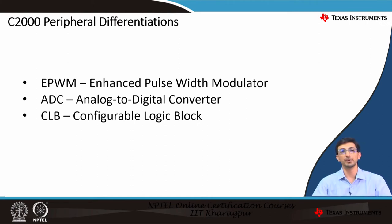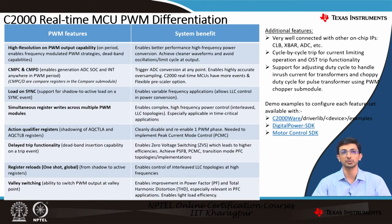Moving on to the key peripheral differentiations that C2000 offers — specifically the sensing and control part — we have the EPWM (enhanced pulse width modulator), ADC (analog-to-digital converter), and CLB (configurable logic block). Starting with the EPWM module, the first feature is the high-resolution PWM output capability, which adds specific use cases when operating at very high frequencies above 1 MHz. It enables better performance for high-frequency power conversions, achieves cleaner waveforms, and avoids limit cycle oscillations at the output.